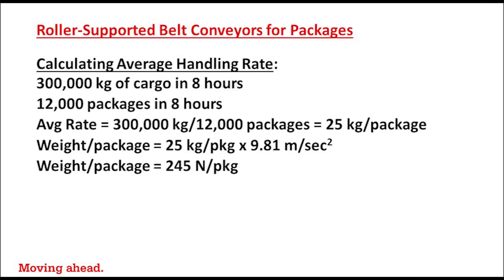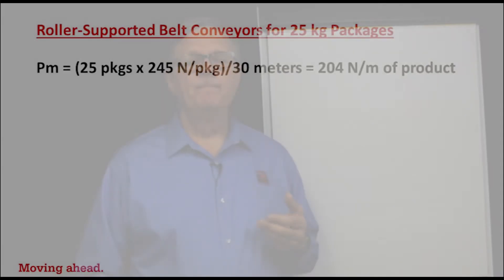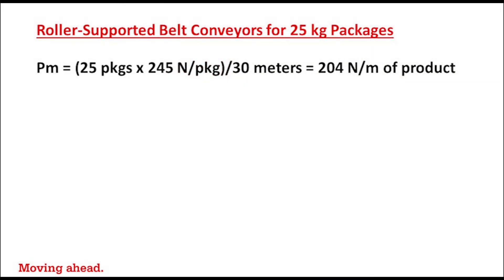Since we know the conveyor will handle 25 packages at any point in time, 25 packages times an average package weight of 245 newtons per package divided by the conveyor length of 30 meters gives us 204 newtons per meter of product.